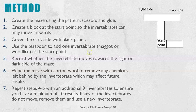Repeat steps four to six at least nine times with nine different invertebrates so you have enough results to calculate a statistic. If any invertebrates placed at the start position just don't move, take them out, wipe the maze with cotton wool and add a different invertebrate.